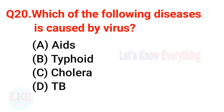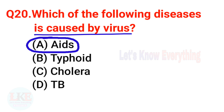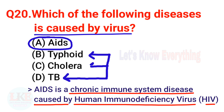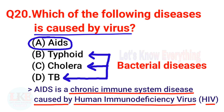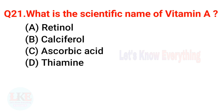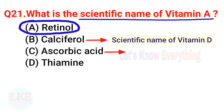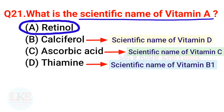Question 20: Which of the following diseases is caused by a virus? The right answer is option A — AIDS. AIDS is a chronic immune system disease caused by the human immunodeficiency virus (HIV). Note: typhoid, cholera, and tuberculosis are bacterial diseases. Question 21: What is the scientific name of Vitamin A? The right answer is option A — retinol. Calciferol is Vitamin D, ascorbic acid is Vitamin C, and thiamine is Vitamin B1.